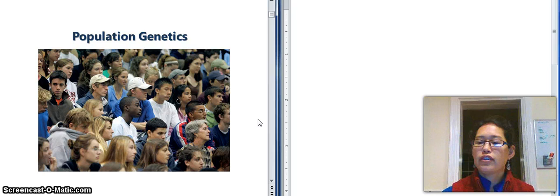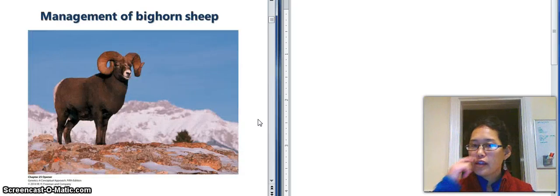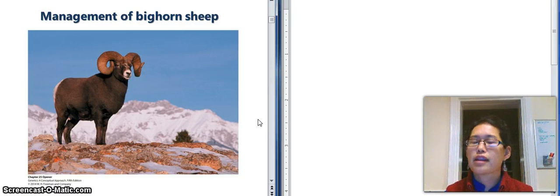And to start off, I'm going to start off with a story. So once upon a time, there was a species called the bighorn sheep. And they're not sheep, but they do have big horns.